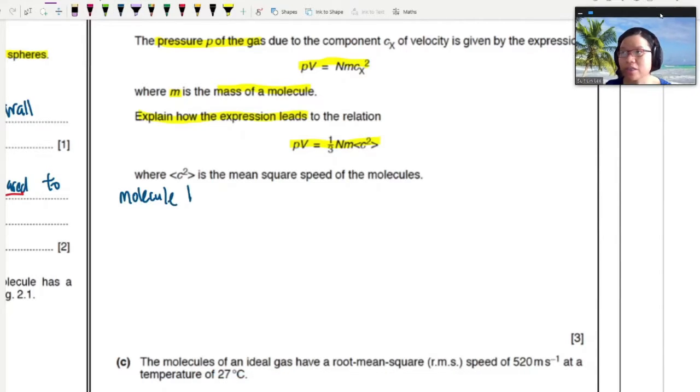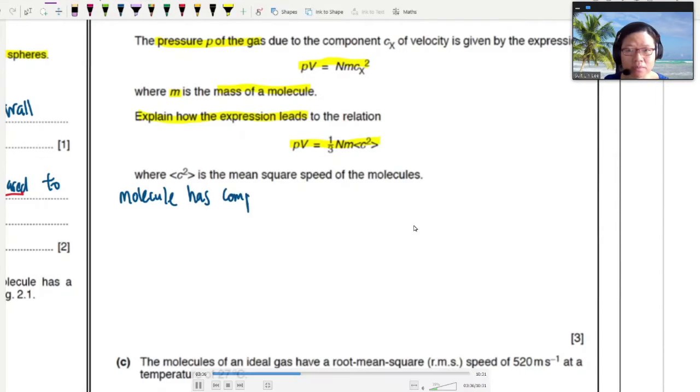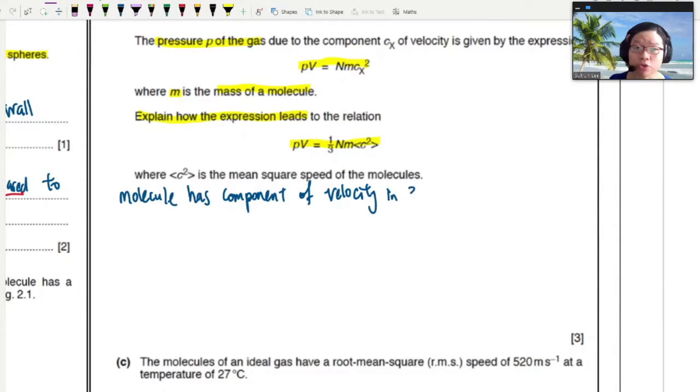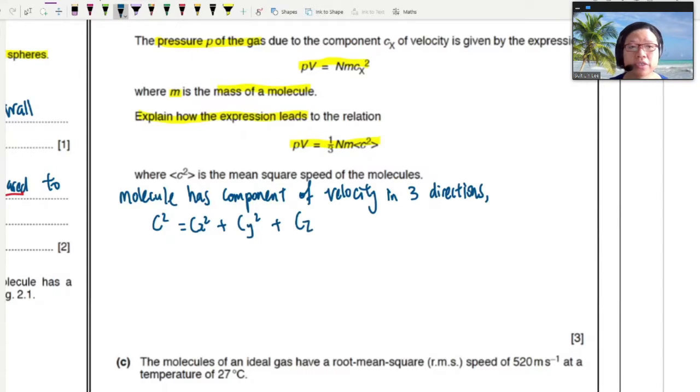The interesting thing here is that you notice, as I mentioned in previous examples, they will ask for proof, but they ask for different parts of the entire proof in the video, in the 10.2 video when I derive the equation. So here, molecules have a component of velocity in three directions because movement is in 3D. So you write this equation now.